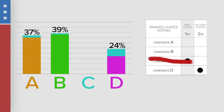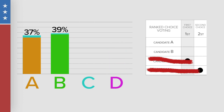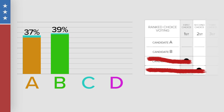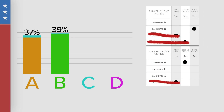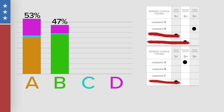You probably understand the process at this point. Candidate D gets eliminated, and that 24% of votes is distributed to the remaining two candidates using C supporters' third preferred candidate and candidate D supporters' second preferred candidate. And there you have it — the majority of voters prefer candidate A.